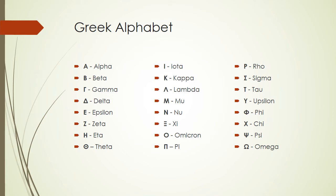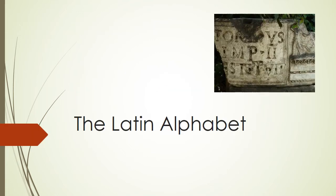Once the reader knows the sound represented by each symbol, combining the letters can produce any of the words of the language. Let's now take a look at the Latin alphabet, which is the one in use today in English.